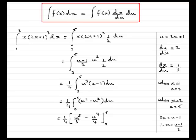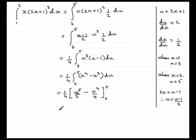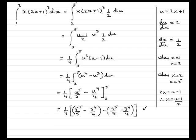And then all we need to do is just substitute the value of 5 through first of all. So we have a quarter. And then we have 5 to the power 5 over 5 minus 5 to the power 4 over 4. And then minus 3 to the power 5 over 5 minus 3 to the power 4 over 4. And if you do that on your calculator, you should find that you get 1101 all over 10.